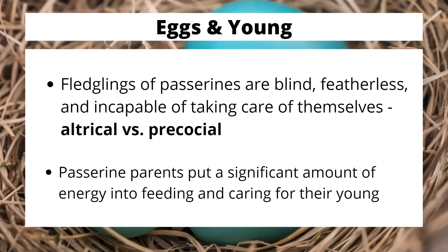The fledglings of passerines are blind, featherless, and incapable of taking care of themselves — imagine the traditional image of wide-open baby bird mouths as mom brings something to eat. This means they are altricial. Altricial versus precocial: precocial means the birds reach maturity earlier — some quail species, for example, can take off out of the nest and find food for themselves. This means passerine parents need to put in a huge amount of time caring for their young, often both parents together.